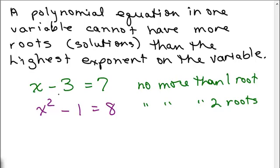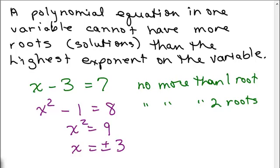We know how to solve linear equations: just isolate the variable, put variables on one side and constants on the other, and solve for X, then check it. For a quadratic — something with a squared term — we'll have 0, 1, or 2 roots. The way I solved it was subtract 8 and factor, but you could also add 1 to both sides and take the square root of both sides to get plus or minus 3. You could also use the quadratic formula if something doesn't factor.